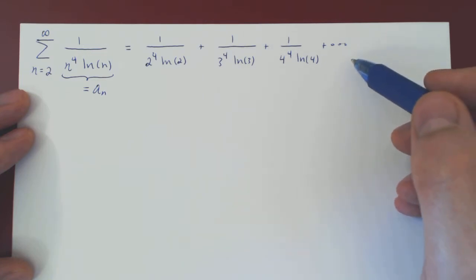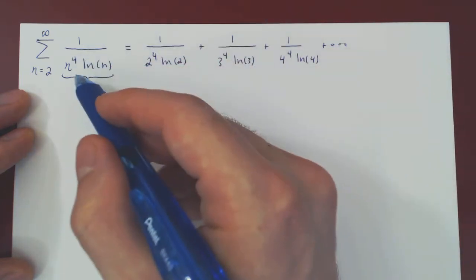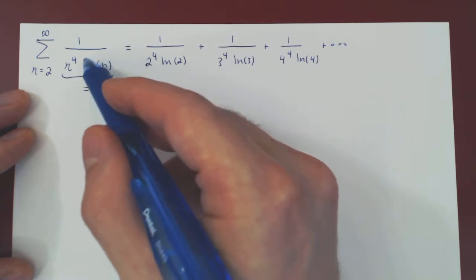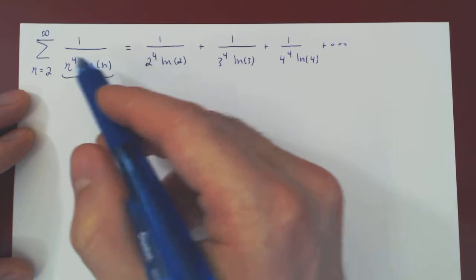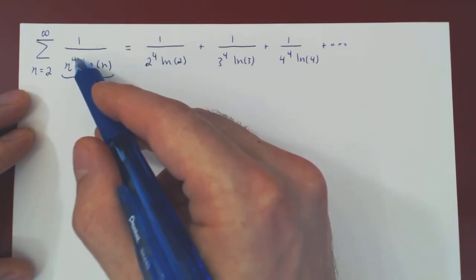What is the principal reason why the terms are small? Well, ln of x is large when n is large, but n to the 4 is much larger than ln of n, as we have a power function which is